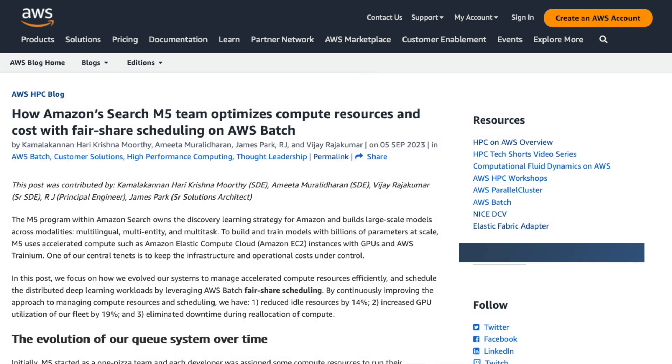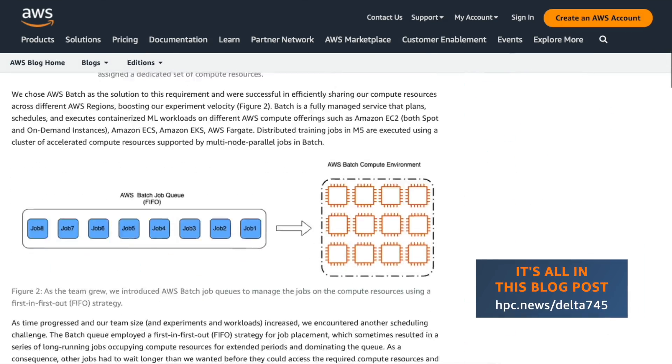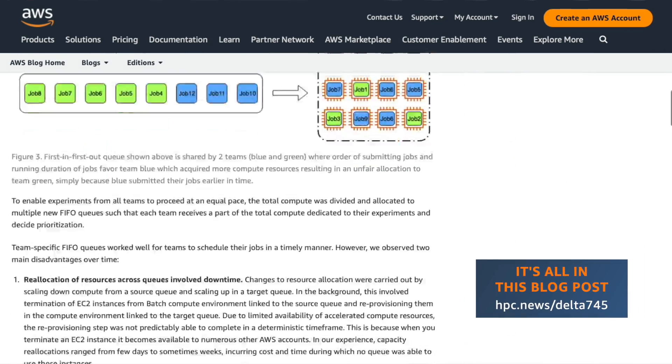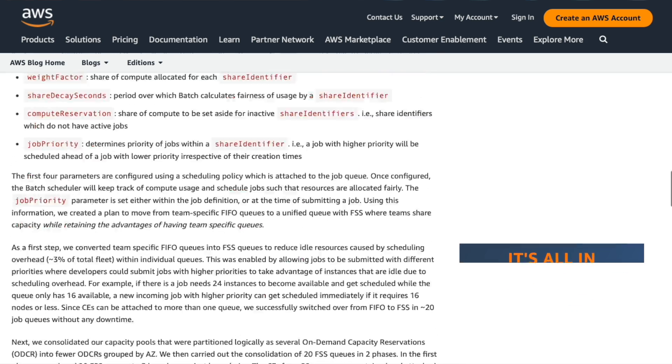This matters for expensive instances on EC2, specifically those with accelerators. We've seen customers manage their own fleet for batch processing like machine learning training, then switch to Batch and see utilization increase from 22% to over 70%. It makes no sense not to use a machine to manage machines when you have that opportunity. Batch offers to manage the fleet for you and does a good job keeping high utilization.